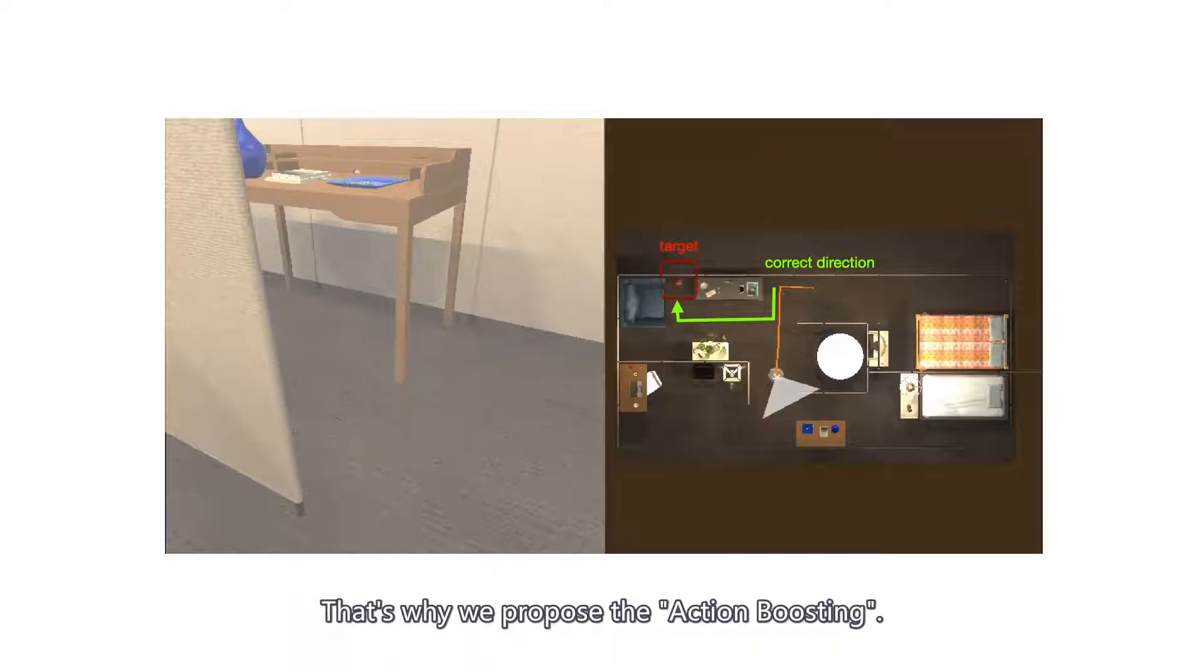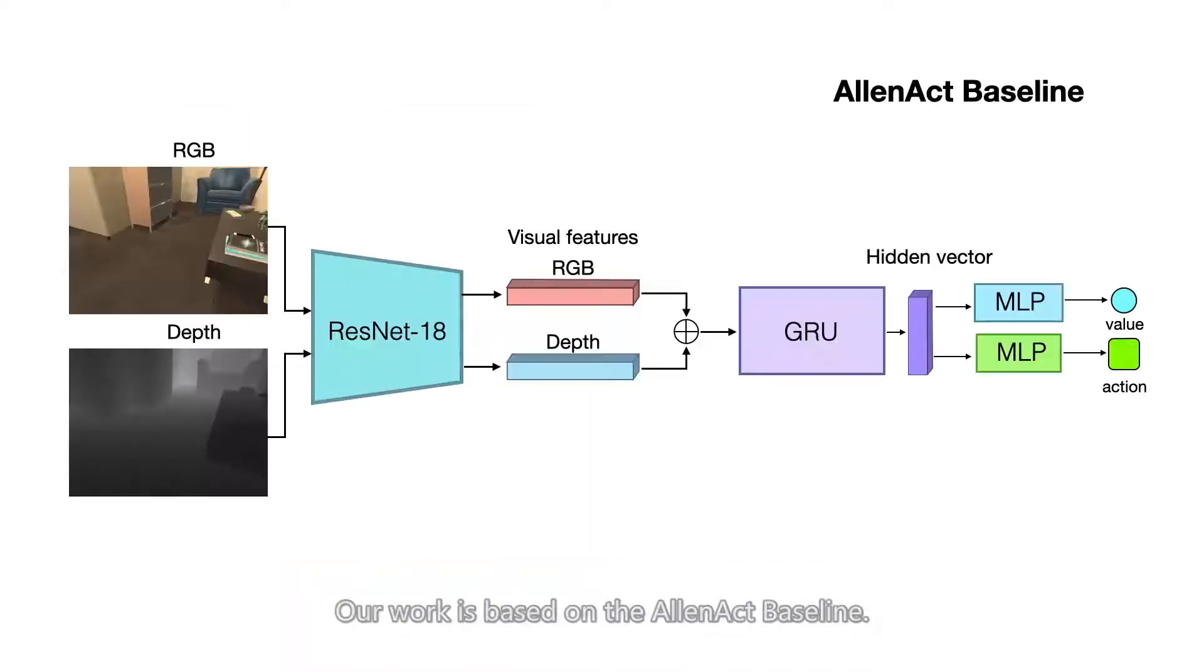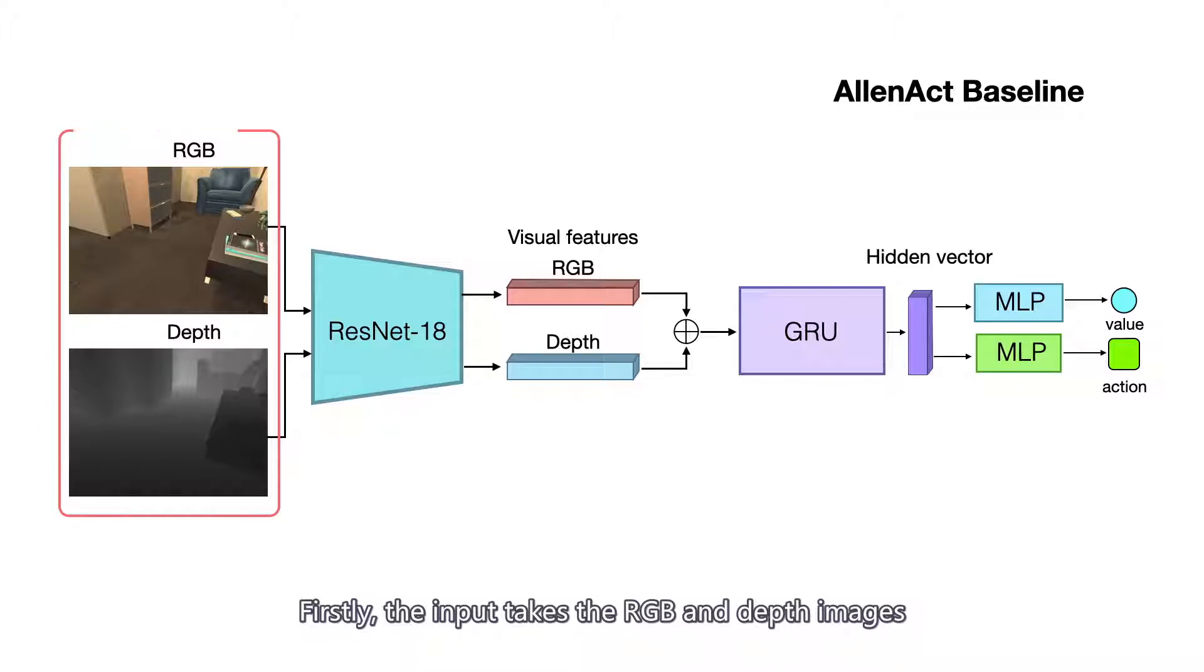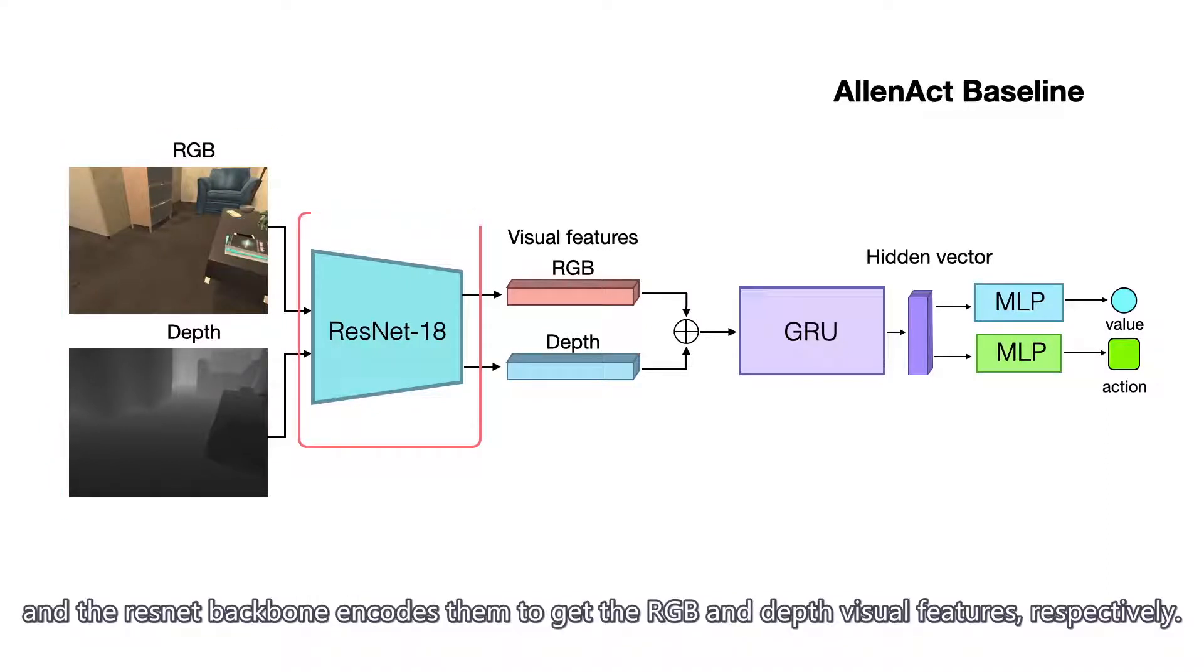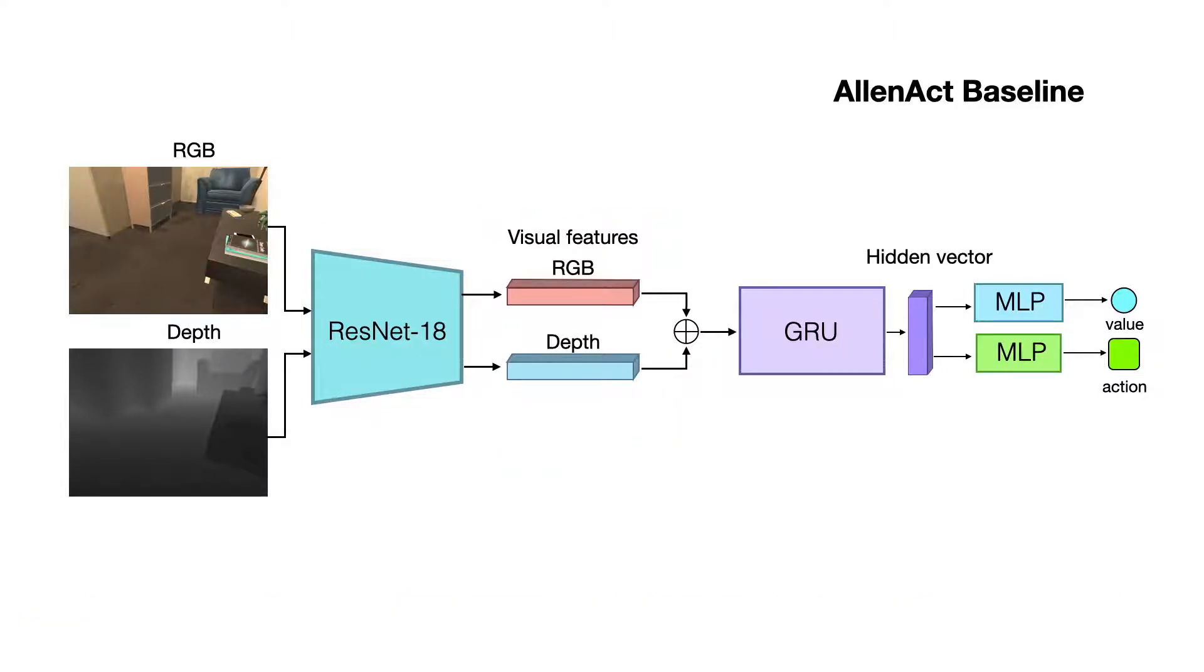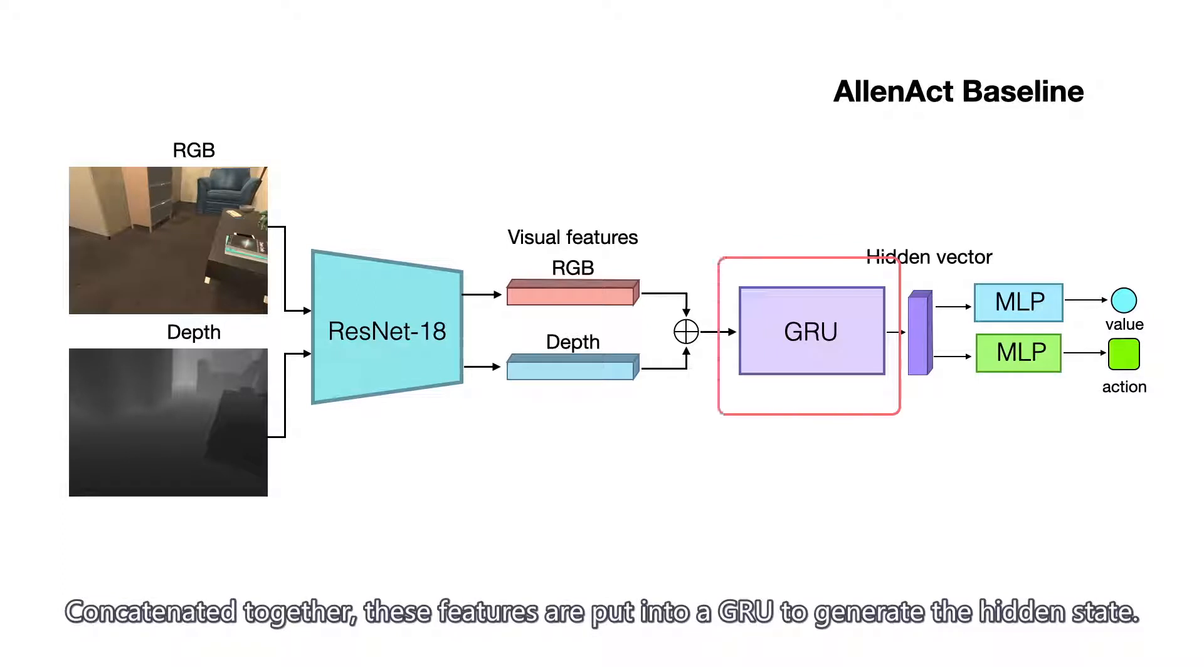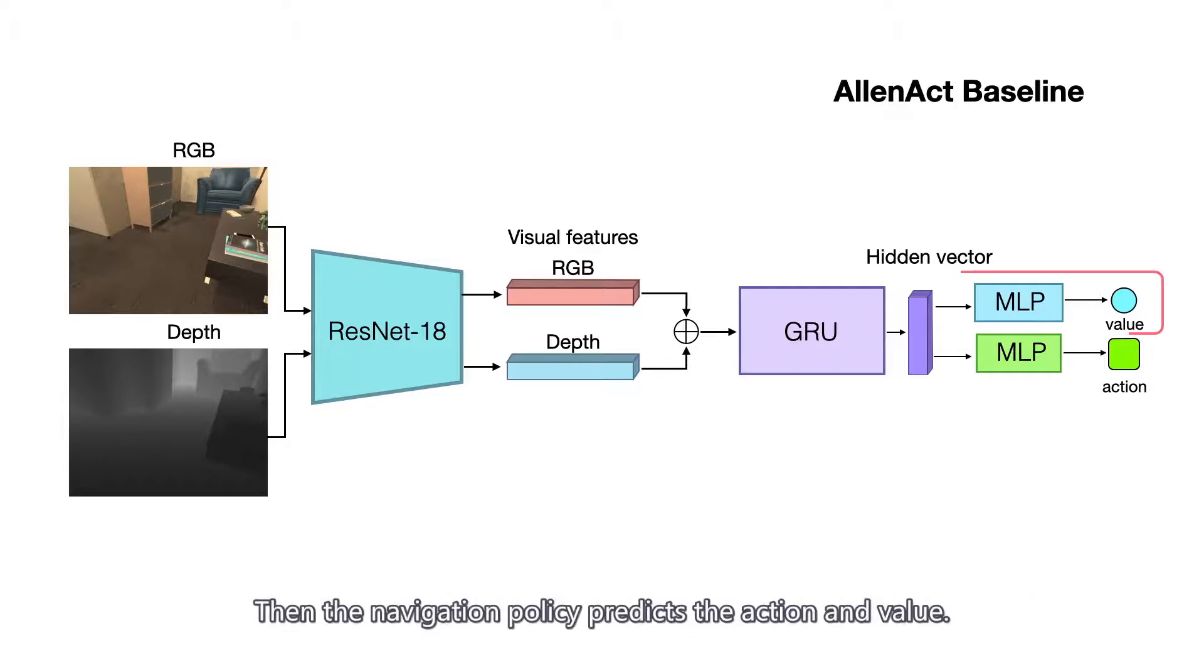That's why we propose Action Boosting. Then, it comes to our framework. Our work is based on the AllenAct baseline. First, the input takes RGB and depth images. The ResNet backbone extracts them to gather RGB and depth visual features, respectively. Concatenated together, these features are put into a GRU to generate the hidden state. Then, the navigation policy predicts action and value. That's the baseline.